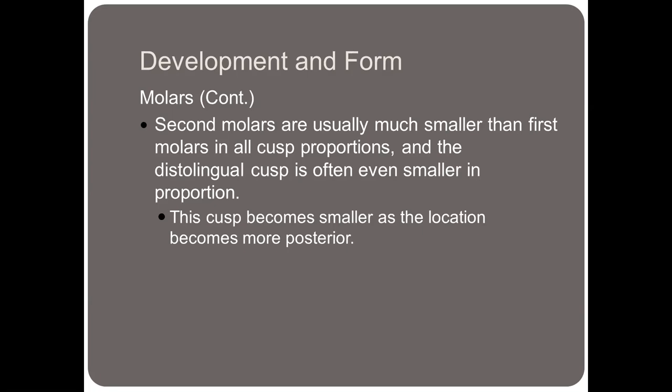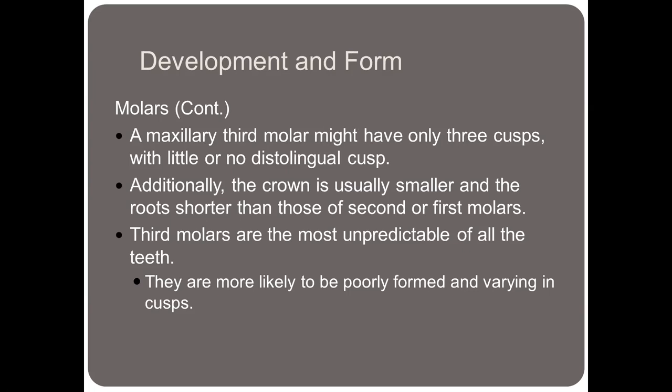The second molars are usually much smaller than the first, and the distal lingual cusp is even smaller in proportion on the second molar compared to the first — this cusp becomes smaller as the location becomes more posterior. So the first molar has the largest distal lingual cusp, the second molar has the smaller of the two, and the third molar oftentimes has a distal lingual cusp missing altogether, meaning it only has three cusps. Additionally, the crown is usually smaller and the roots are shorter than the second molar and first molar.